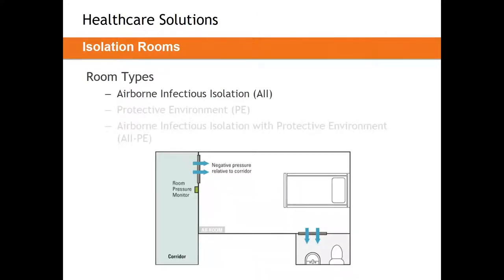In an airborne infectious isolation room, we house and treat patients who have communicable diseases — tuberculosis, smallpox, influenza, or measles, for example. We can't put the rest of the hospital at risk, so we need to isolate that airflow. In an AII room, we negatively pressurize the space. Air will constantly flow into that room from the rest of the building, with a large proportion flowing in around the doorway.